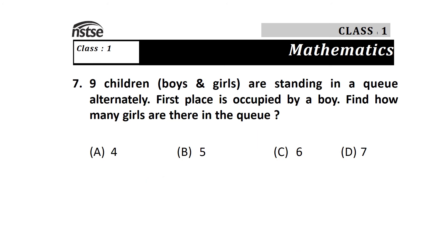Question 7: 9 children, boys and girls, are standing in a queue alternately. First place is occupied by a boy. Find how many girls are there in the queue. If the first place is a boy, then we count them alternately and we get answer A) 4 girls.